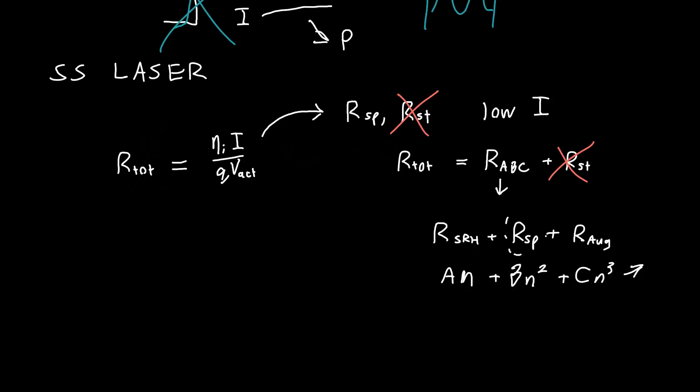And we're interested in extracting primarily this term, because this is the term that's relevant to output power. This is a useful optical power that we get out of this recombination. We don't get anything useful out of Auger or Shockley-Reed-Hall recombination, except for heat, which we're not a huge fan of generally. It's not terribly useful.